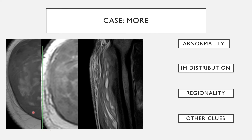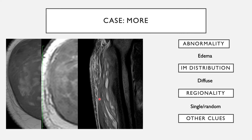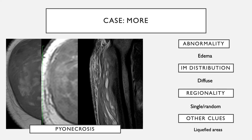In another case, there are areas bright on T1 weighted images, heterogeneous coalescing areas on T2, and cystic fluid-like areas on fluid-sensitive fat suppressed images. The primary abnormality is muscle edema diffusely involving a single muscle group, with liquefied areas. When you see liquefaction within muscle, you think of pyonecrosis. This is an example of pyonecrosis.